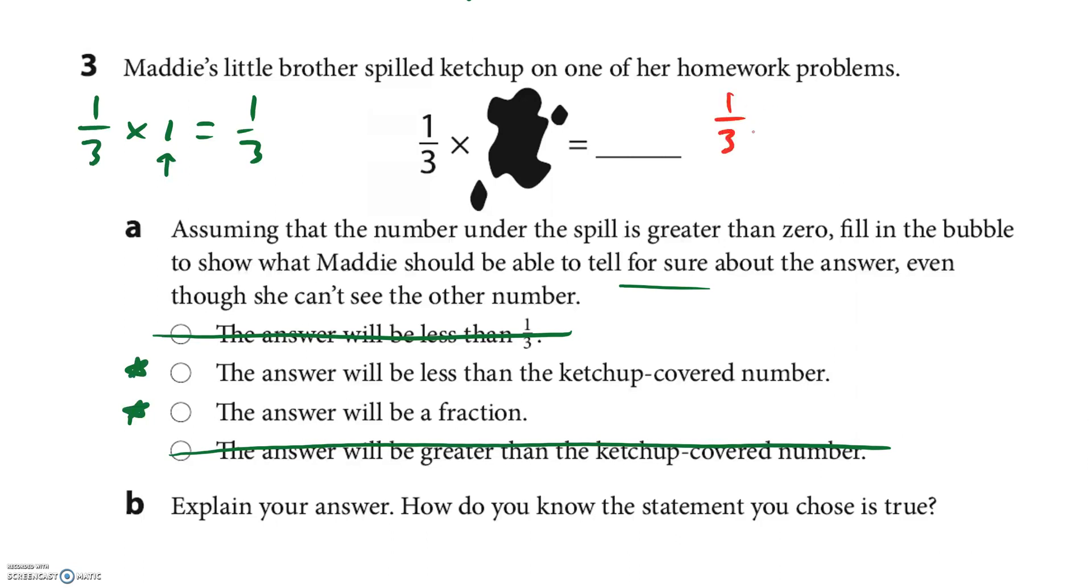1/3 times the ketchup covered number, oh look I'm using red, is 2/3. There's the ketchup covered number. That would be 2/9. Okay, so the only ones I'm worried about are those middle two. The answer will be less than the ketchup covered number, that's true so far, right? The answer will be a fraction, that's true also. Let's try one more, let's try a whole number. 1/3 times three, let's just go by three. So 1/3 times 3, there's 3 over 3 equals 1. Here's the ketchup covered number, this is a 3. Okay, so the answer will be less than the ketchup covered number, yes it was 1. The answer will be a fraction, hmm, didn't turn out as a fraction, that's a no.